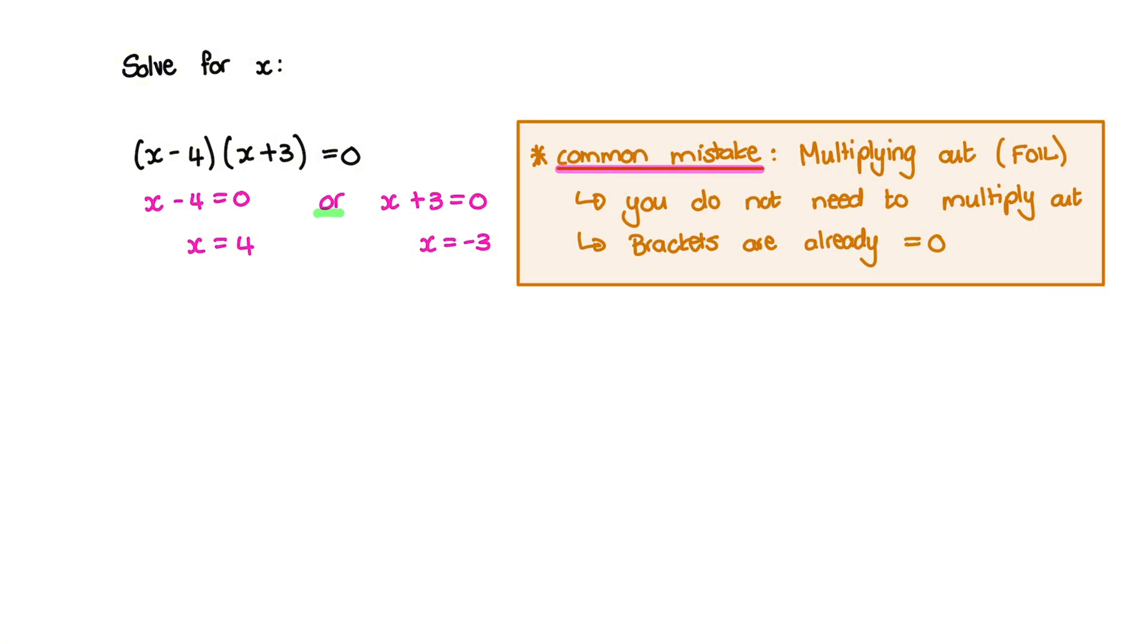So remember that you do not need to multiply out when you have your brackets already equal to 0.